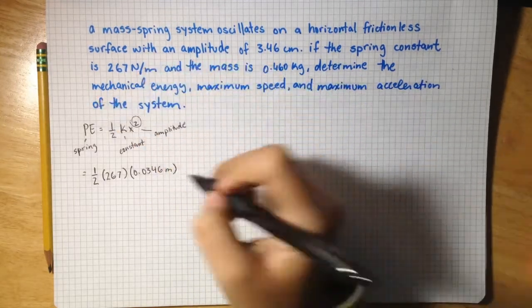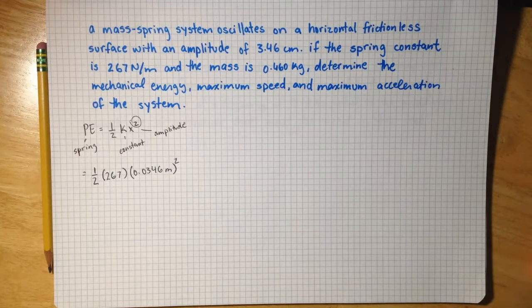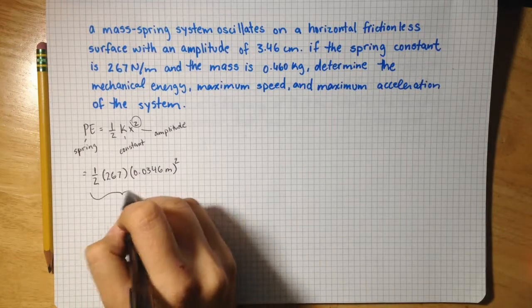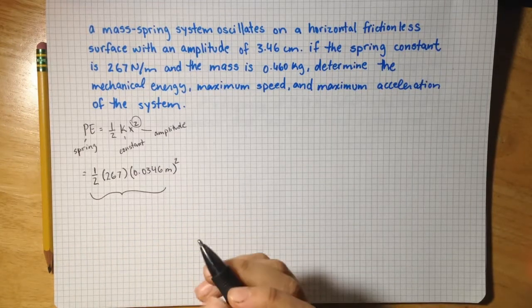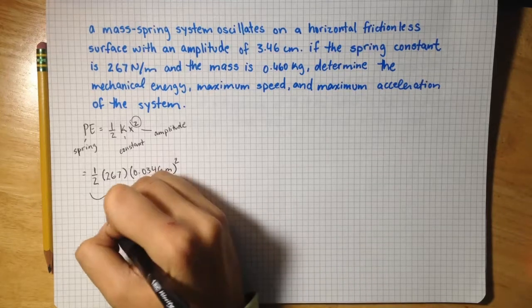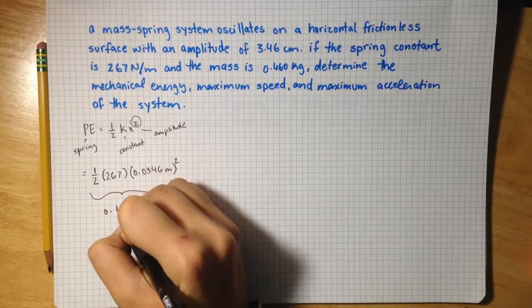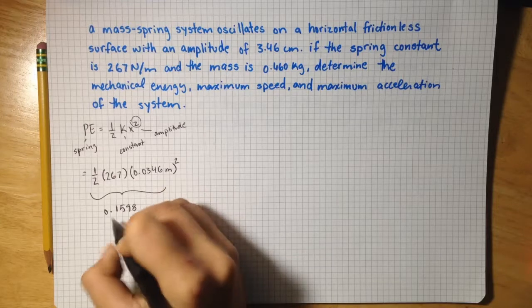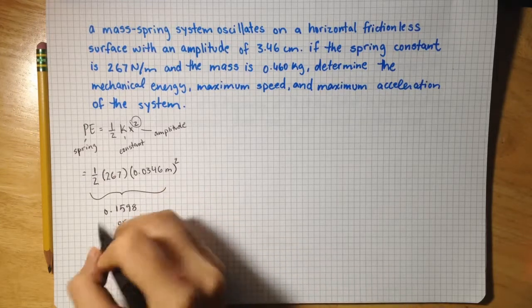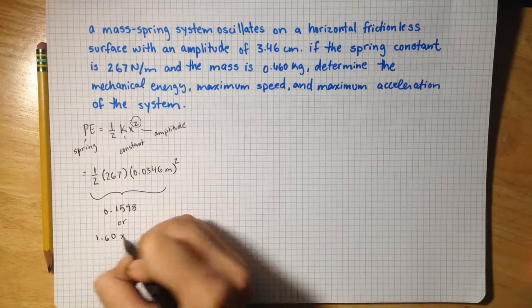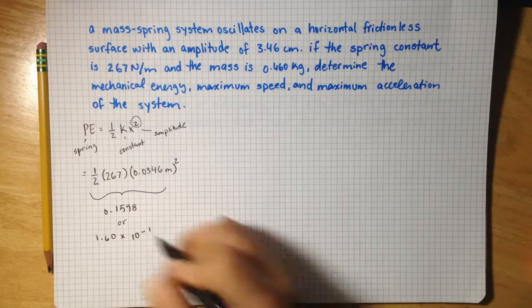And don't forget this squared sign. Plugging into the calculator, you get 0.1598 or 1.60 times 10 to the negative 1.